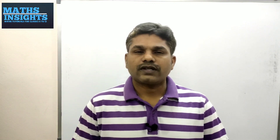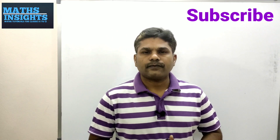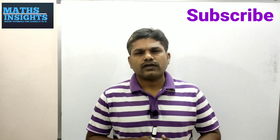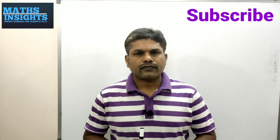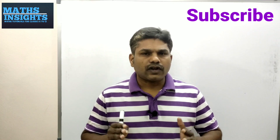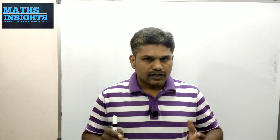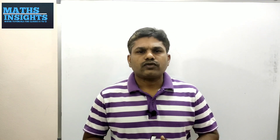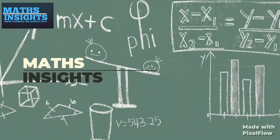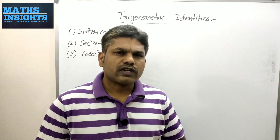Hi viewers, welcome to our YouTube channel Math Insights. Today we are going to discuss a very important topic in trigonometry — trigonometric identities. Trigonometric identities are very useful in solving problems in this chapter. These identities are like pillars to a building; if the pillars are not good then the building will not last for a long time. These are very important to solve the remaining problems in trigonometry, and I am going to explain these identities with proofs.